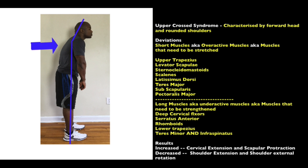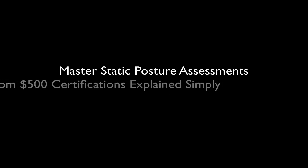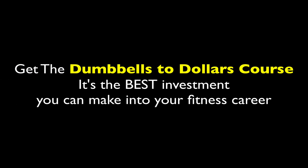The underactive muscles that need strengthening are the deep cervical flexors, serratus anterior, rhomboids, mid and lower traps, teres minor, and infraspinatus. We see increased cervical extension, increased scapular protraction, decreased shoulder extension, and decreased shoulder external rotation — the shoulder is coming inward. Make sure to memorize these tables, and then we'll go into dynamic posture assessments.